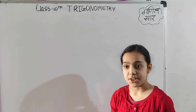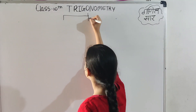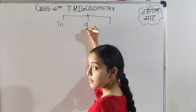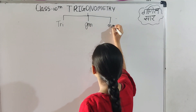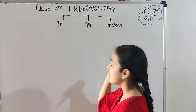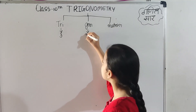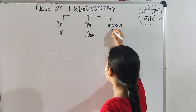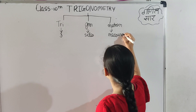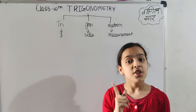Trigonometry is formed by three words: tri, gon, and metron. You will think, what is the meaning of these three words? Tri means three, gon means sides, and metron means measure.